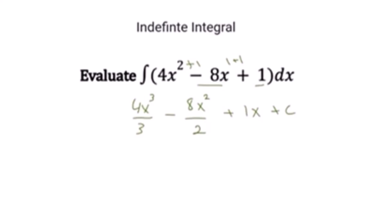And then 4 over 3 is going to give us 4x to the power of 3 over 3. And negative 8 over 2 is going to give us negative 4x to the power of 2 plus 1x plus c. And that's the answer.